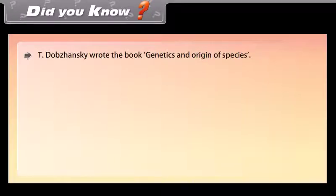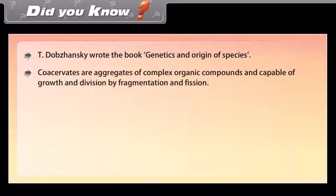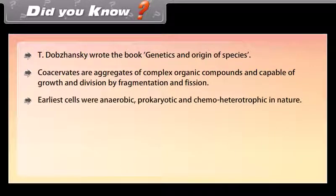Did you know: T. Dobzhansky wrote the book Genetics and Origin of Species. Coacervates are aggregates of complex organic compounds and capable of growth and division by fragmentation and fission. Earliest cells were anaerobic, prokaryotic, and chemo-heterotrophic in nature.